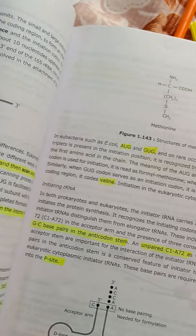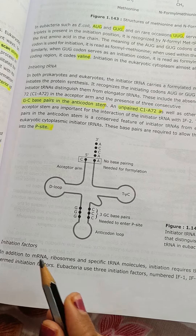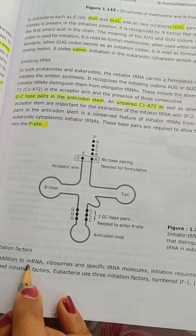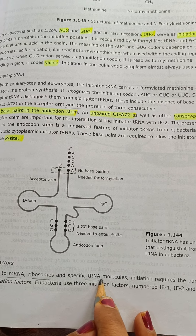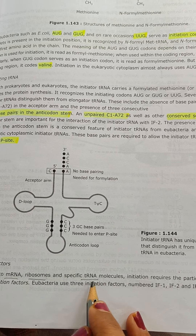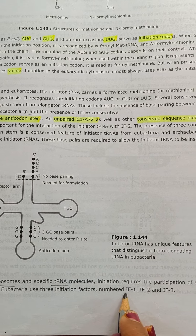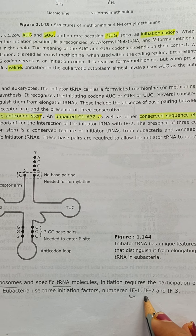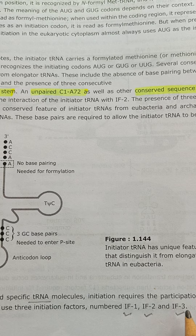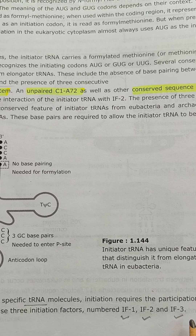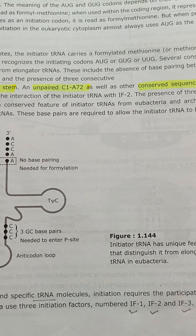Now we shall move on to how exactly initiation happens. The three important components required for translation are mRNA, ribosomes, and specific tRNA molecules. In addition to these, the initiation phase also requires certain initiation factors: IF1 (initiation factor 1), IF2 (initiation factor 2), and IF3 (initiation factor 3). These initiation factors along with mRNA, ribosomes, and specific tRNA molecules are all important for initiation of protein synthesis.